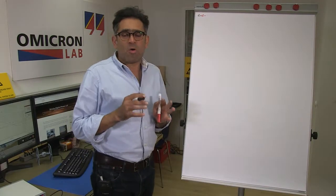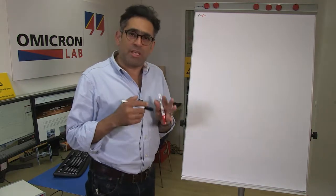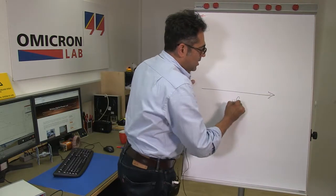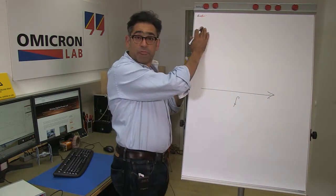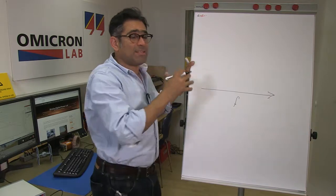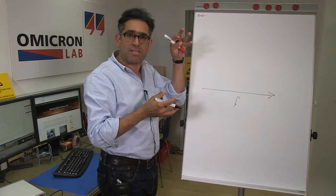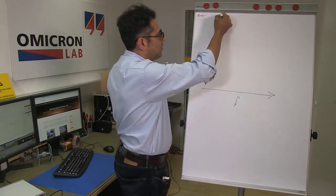So how do we go about selecting the size of the injected signal? We know that with respect to frequency, our power supply has got very high gain at low frequencies. So that means that it's going to reject any disturbance and therefore we're going to have to increase the size of the injected signal at low frequencies.